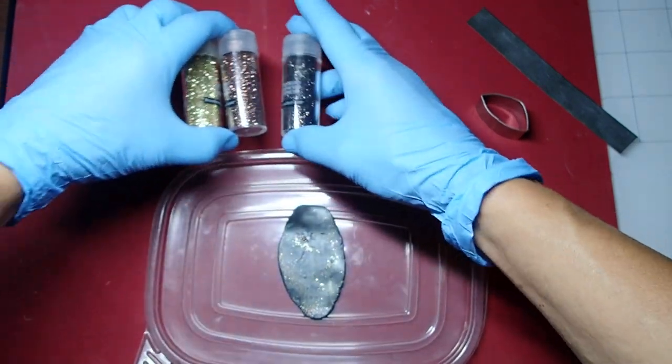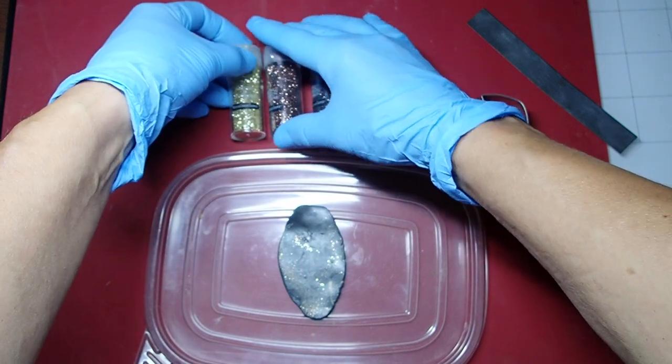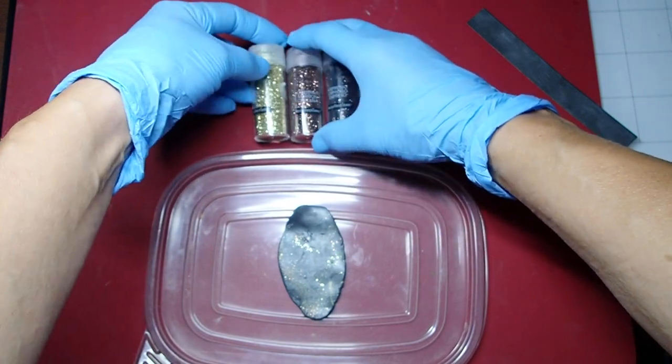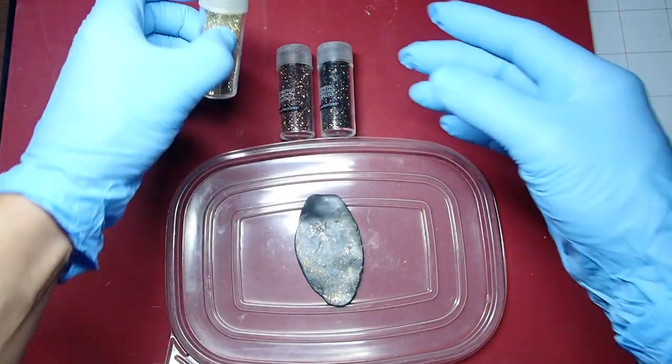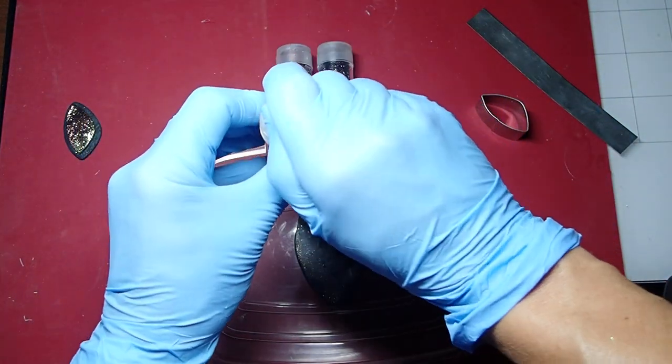These are the three glitters that I'm using. You see the gold, this one is called chestnut, and espresso. But I mean, this is your game. Whatever colors that you want to use, go for it.